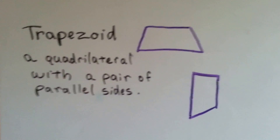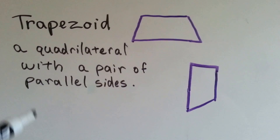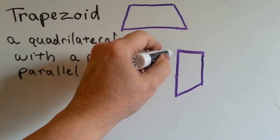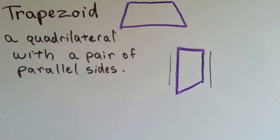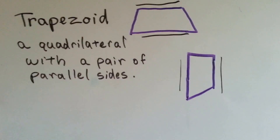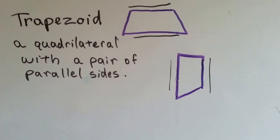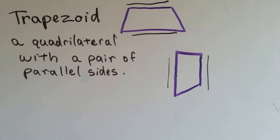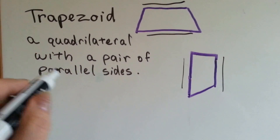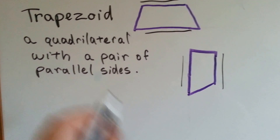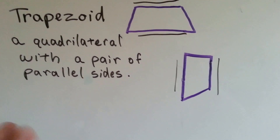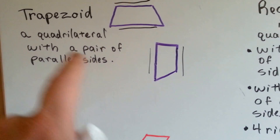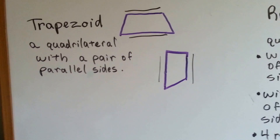One type of quadrilateral is a trapezoid. It's a quadrilateral with a pair of parallel sides. This side is parallel to that side, and this side is parallel to that side. Can you see it? My drawings aren't perfect, so they might be a little bit off, but my intention was for those to be parallel. So that's a trapezoid — it's got a pair of parallel sides. It's got four sides, that's what quadrilateral means, and it's got a pair of parallel sides.